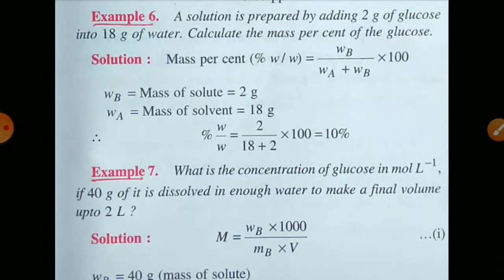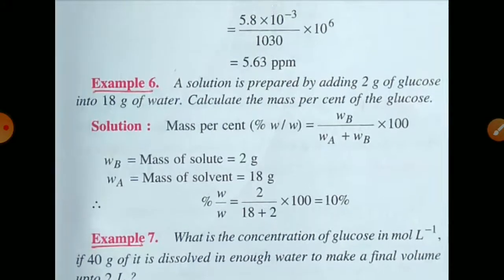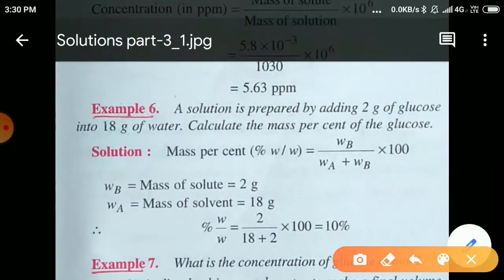Next question: A solution is prepared by adding 2 g of glucose in 18 g of water. Calculate the mass percent of glucose. Mass percent = mass of solute / mass of solution × 100. Here, 2 g glucose is the solute and 18 g water is the solvent.